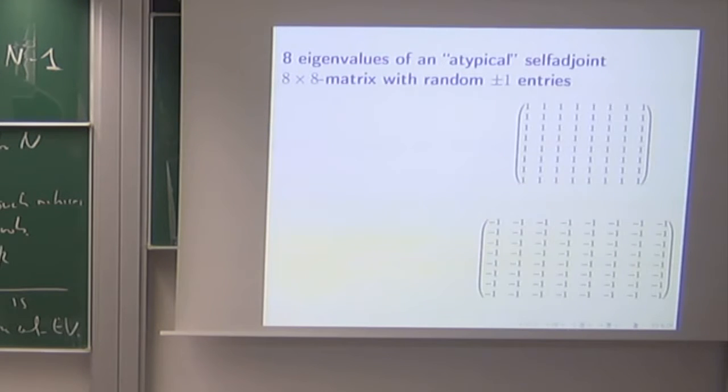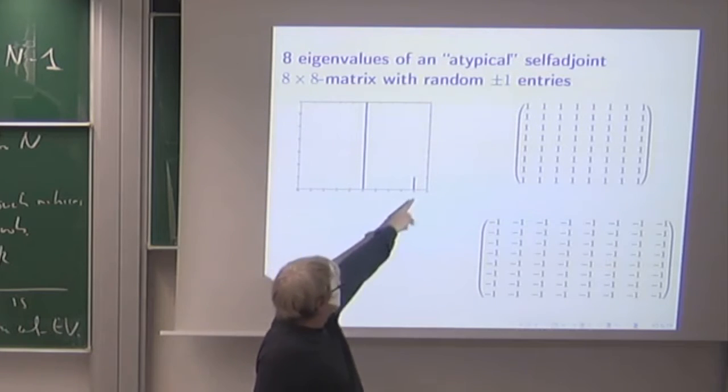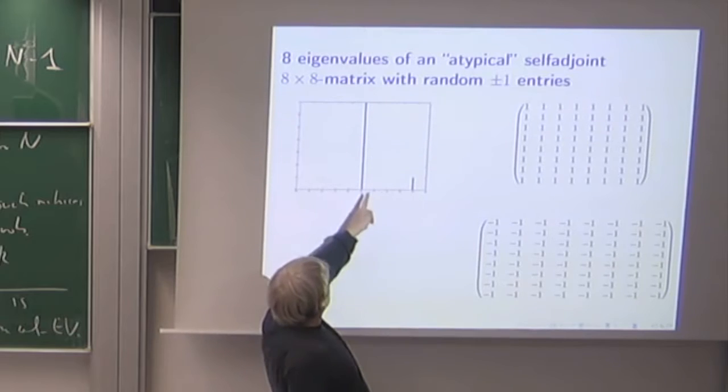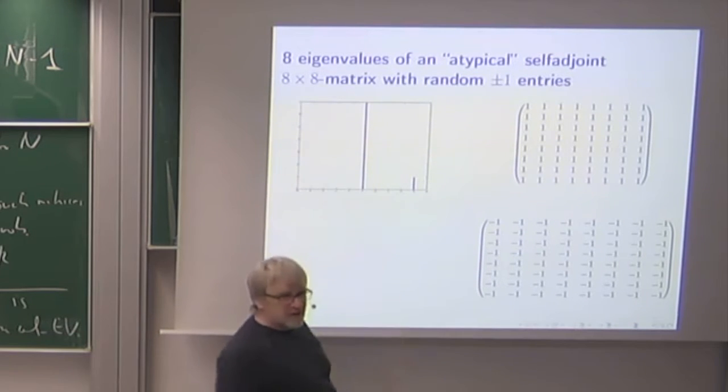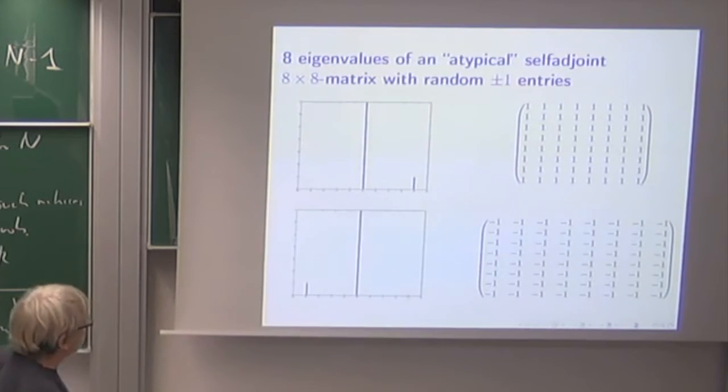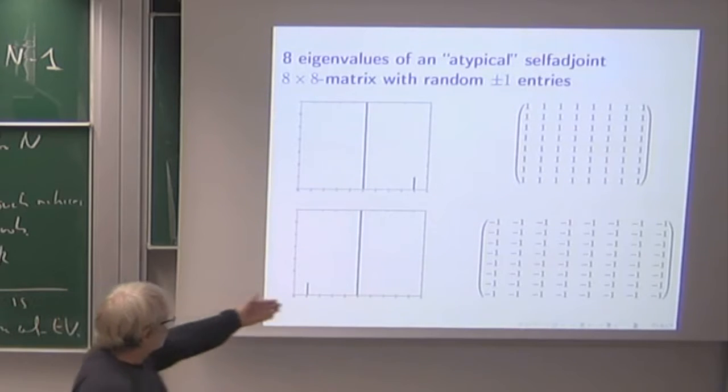Say I am looking on 8 by 8 matrices. I mean there are already quite a bit of them, and again there are the very special ones where all the entries are one or all the entries are minus one. Okay, and of course they have very special eigenvalues. So namely this has one eigenvalue 8 and seven times it has the eigenvalue zero, and here of course it's the other way around, so minus eight and zero.